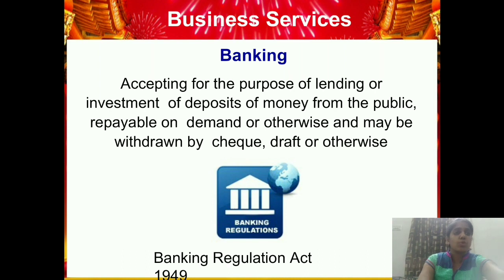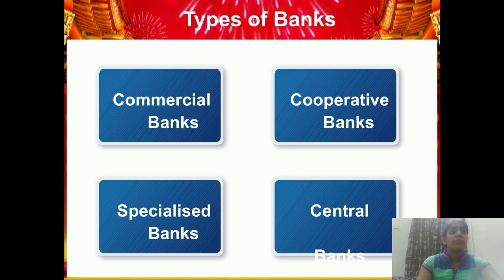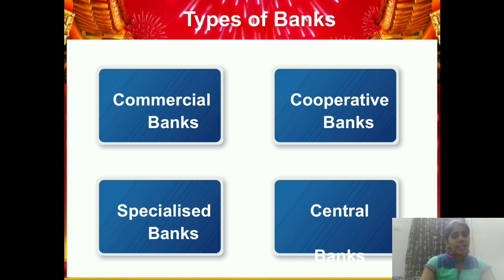Now let's move to the types of banks. Generally we have four types: the first is commercial banks, the second is cooperative banks, the third is specialized banks, and the fourth is central banks. We will cover all four types today — commercial, cooperative, specialized, and central.